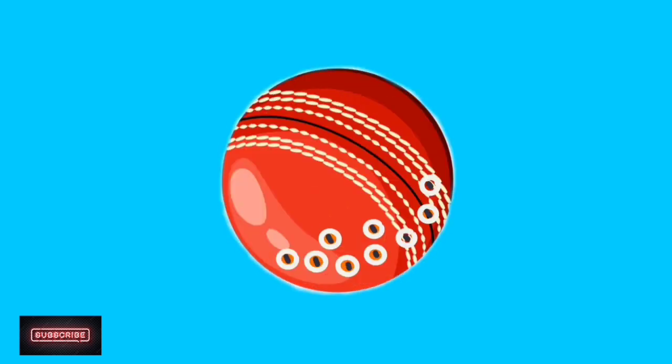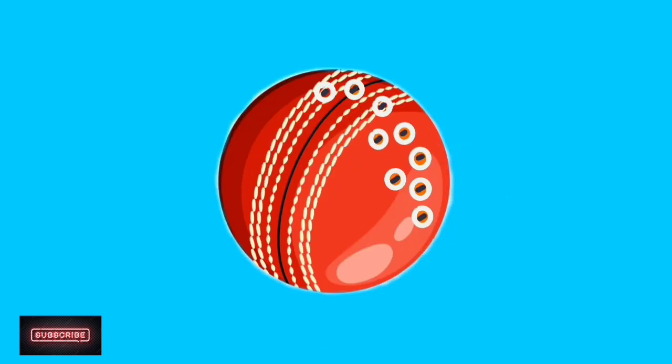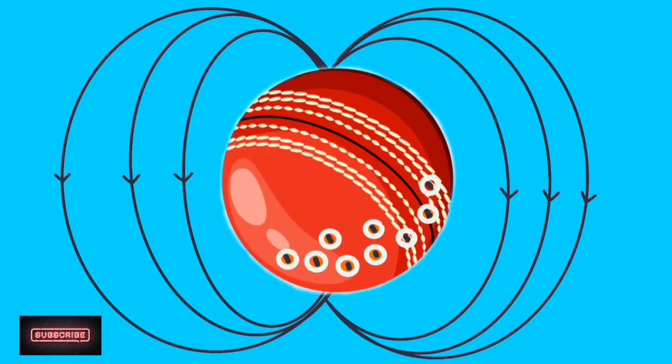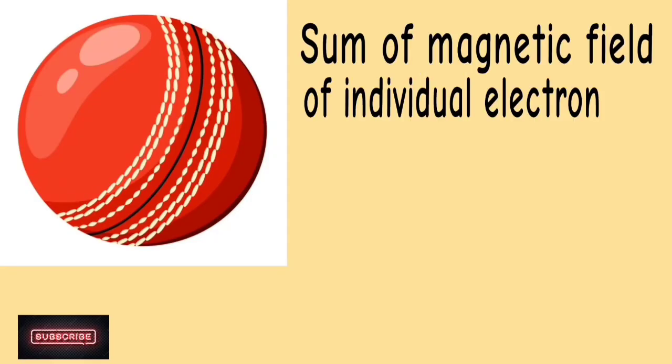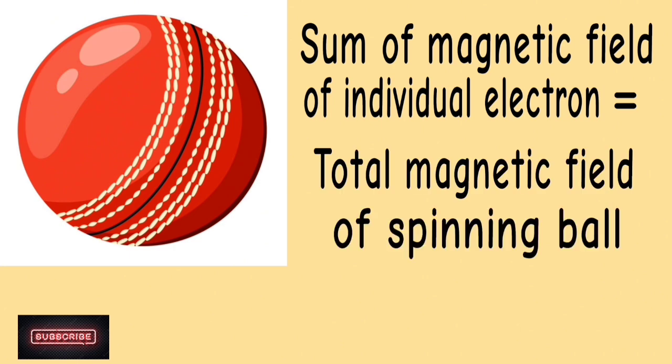Now it turns out that if you take a ball of charge and if you make it spin, then you have moving electrons. These moving electrons can produce a magnetic field. And if you calculate the amount of magnetic field for individual electrons and add them up, then you will get exactly the same amount of magnetic field which the spinning ball has.